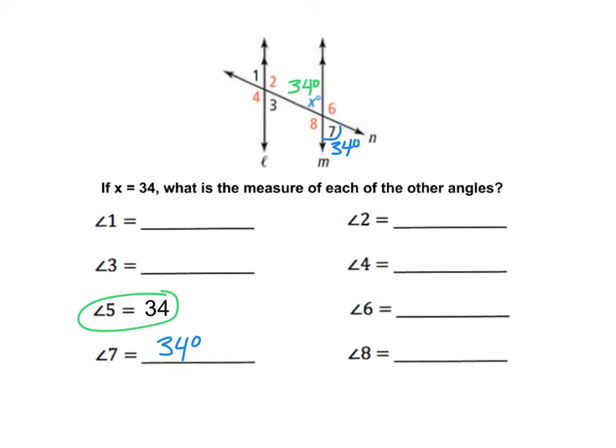Now I'm going to look for other angles that are 34 degrees. Remember that alternate interior angles are congruent to each other. If we look at angle x here, 34 degrees, angle x and angle 3 are alternate interior angles. And alternate interior angles are congruent. So angle 3 would also be 34 degrees.